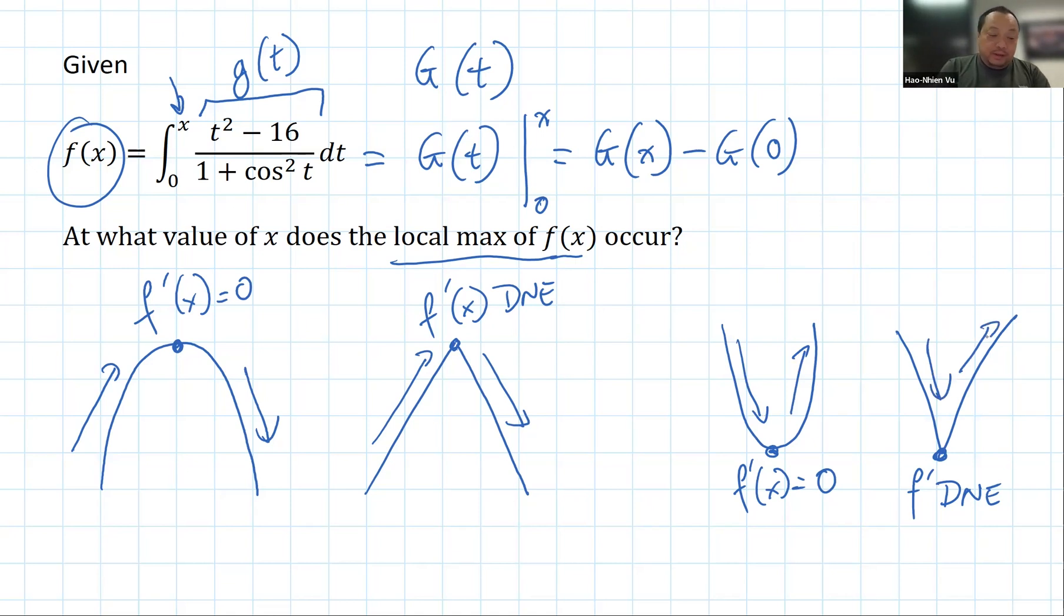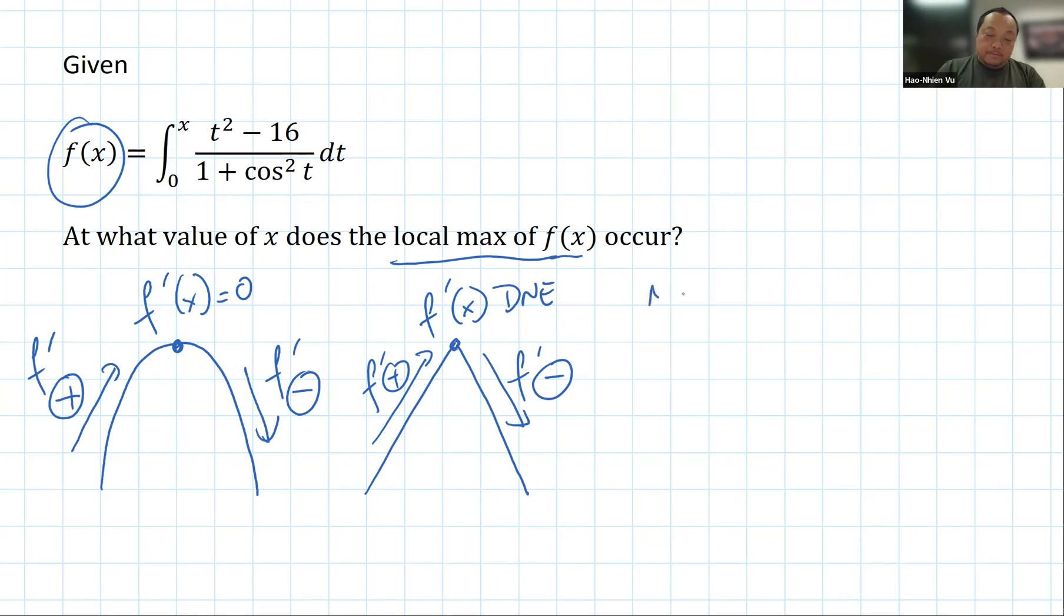Well, when you go up, the derivative is positive. And when you go down, the derivative is negative. Go up, f prime is positive. Go down, f prime is negative. So in order to find a local max, it sounds like I need to find the derivative of this function f, just the first derivative. I don't need the second derivative. And then figure out where it is positive and where it's negative. I need f prime of x and I need to check its signs. Where is it positive? Where is it negative? And where is it zero?